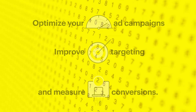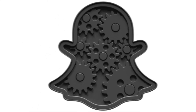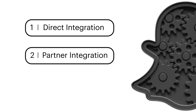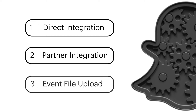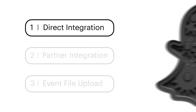Implementing the Conversions API requires some technical expertise. We recommend a developer assist with implementation. There are three methods you can use to pass data to Snapchat: 1. Direct Integration, 2. Partner Integration, 3. Event File Upload. This video will focus on direct integration.